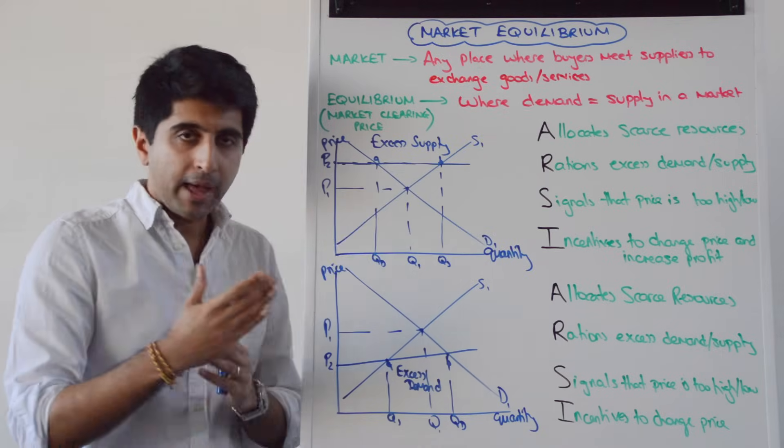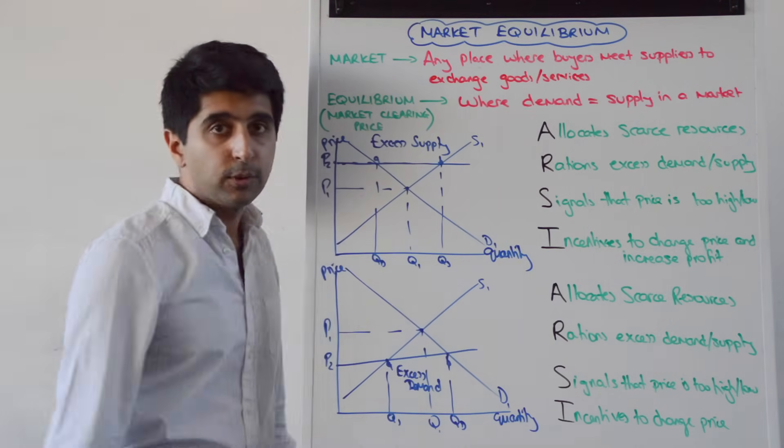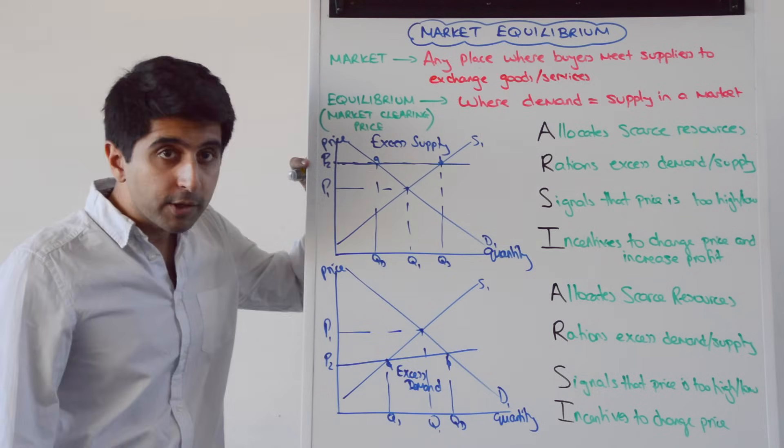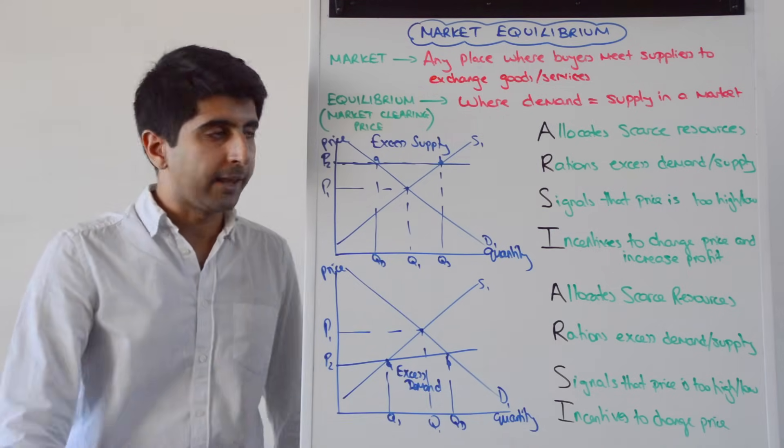So equilibrium is where demand and supply cross. Disequilibrium is when demand is not equal to supply. Maybe because the price is above equilibrium or maybe because the price is below equilibrium and we see divergence between supply and demand.